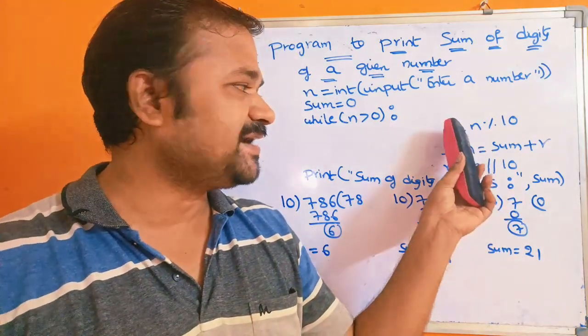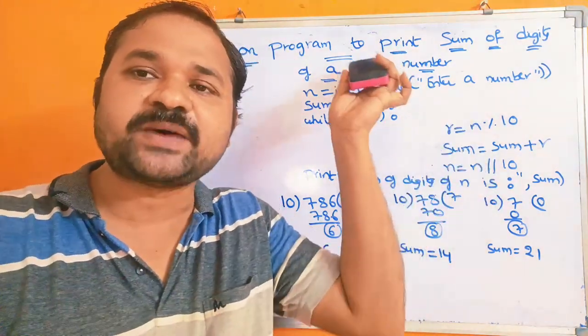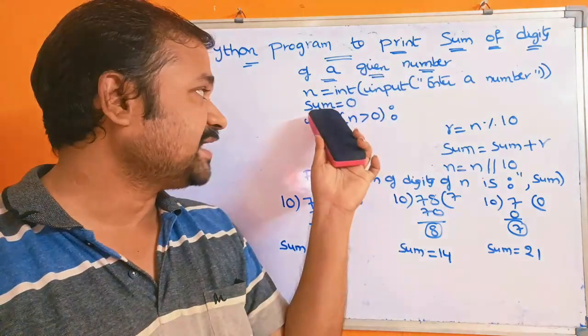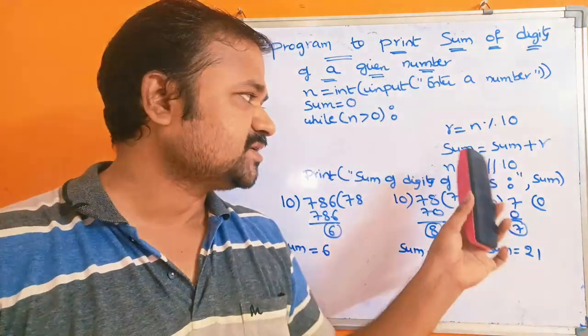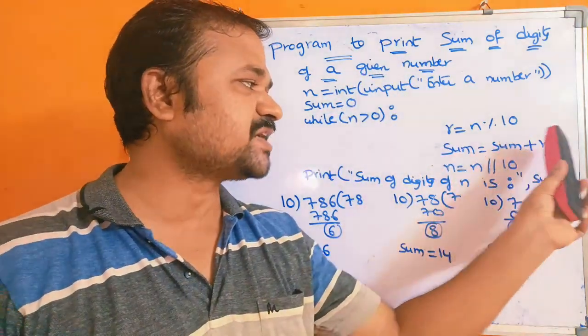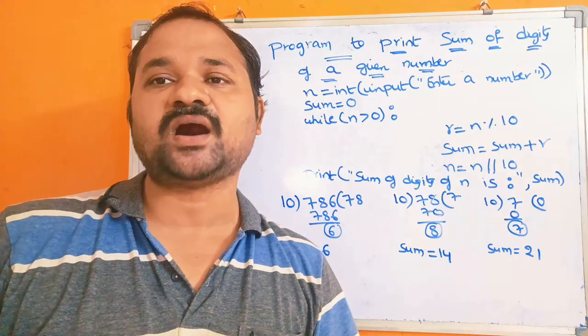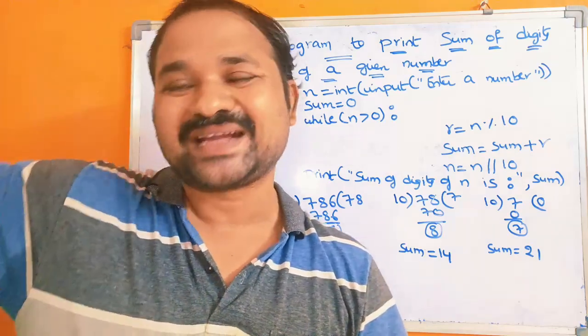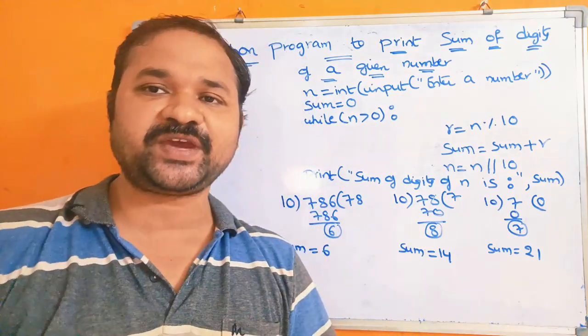Next we have to add that remainder to the sum value. The initial value of sum is 0, so sum is equal to sum plus r. Now that last digit is added to the sum.